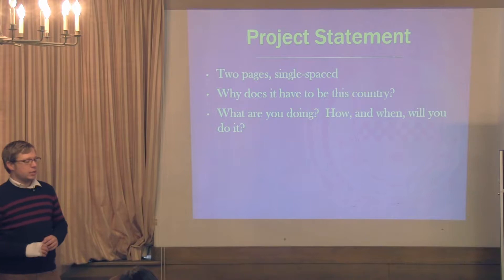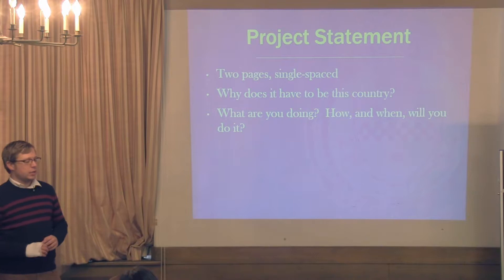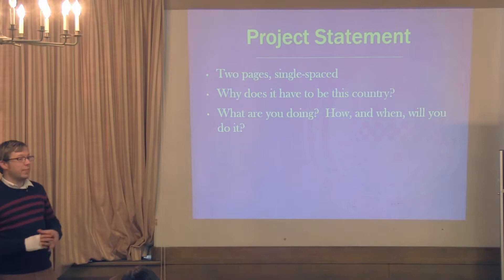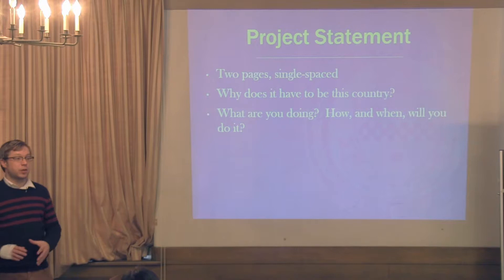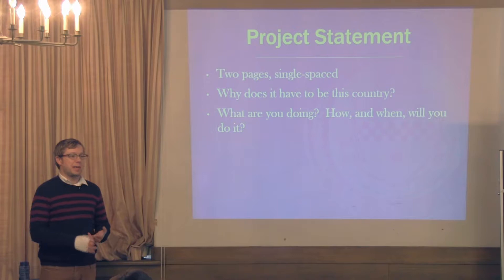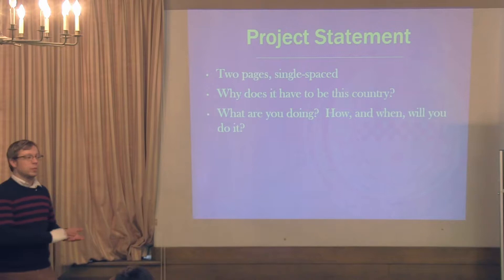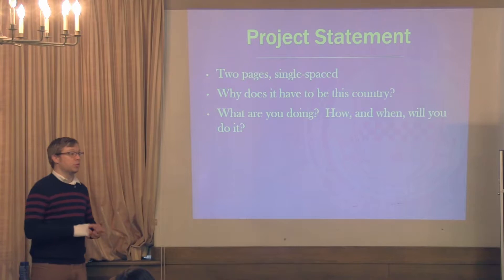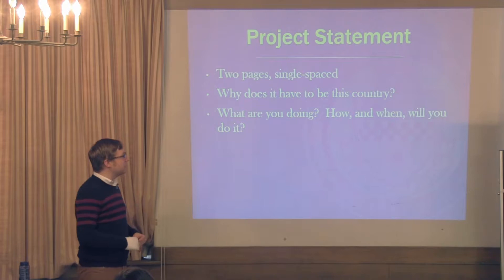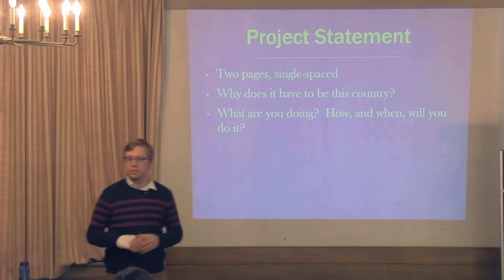If you're applying for a university study grant, the 'how and when' will describe what the program looks like — the academic structure. Does it have semesters or trimesters? Is there a master's thesis? Will you be taking classes and then doing the thesis in the second half, or working on the thesis the entire time? Is it a research-based degree where you don't take classes? All of those questions need to be answered because the reader doesn't necessarily know the academic program you're applying to.